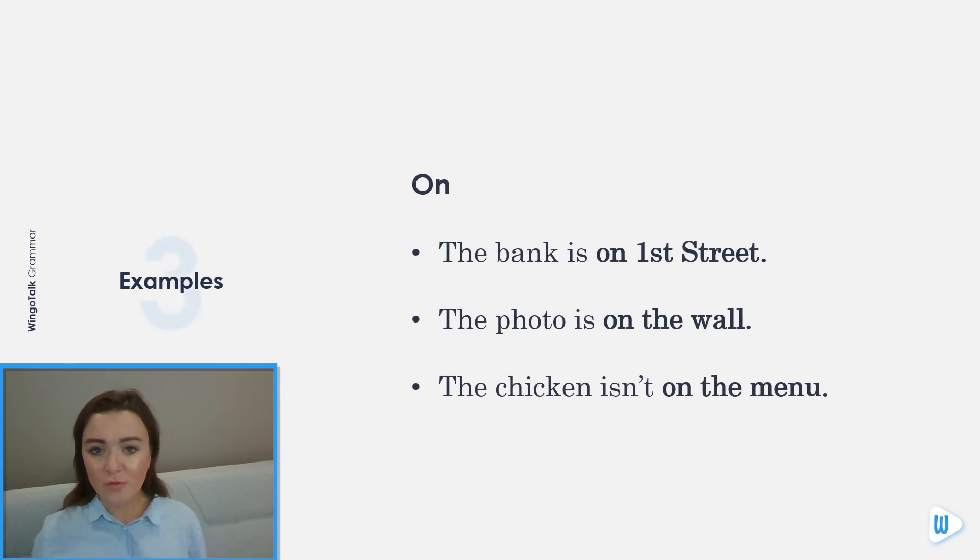Some examples using on: The bank is on First Street. The photo is on the wall. The chicken isn't on the menu.